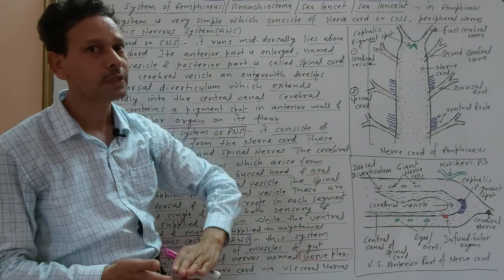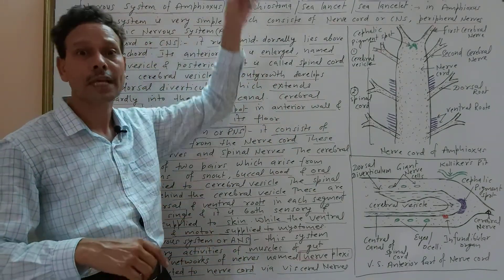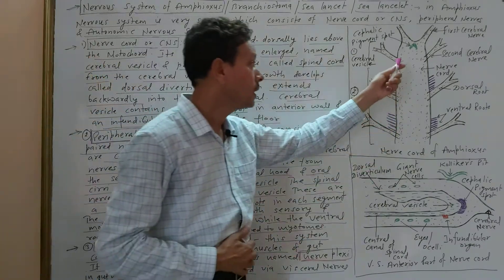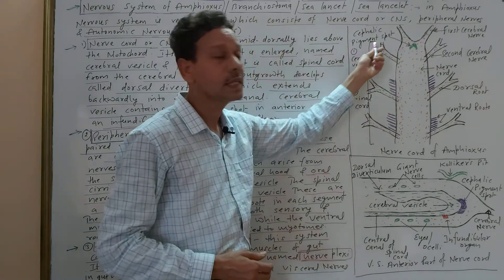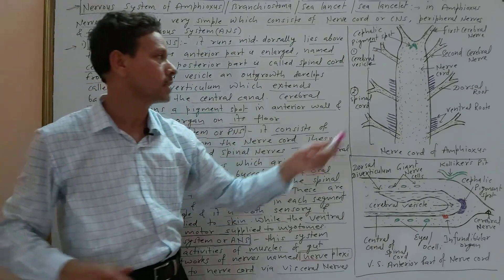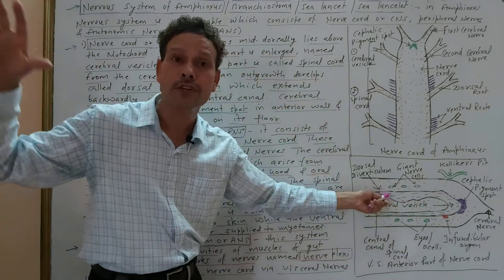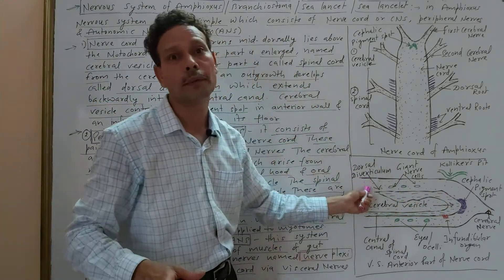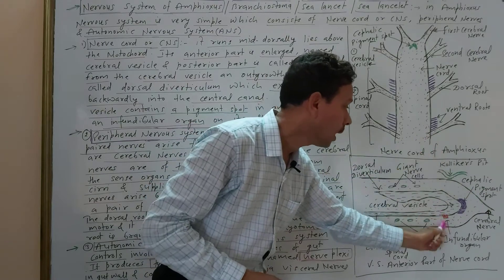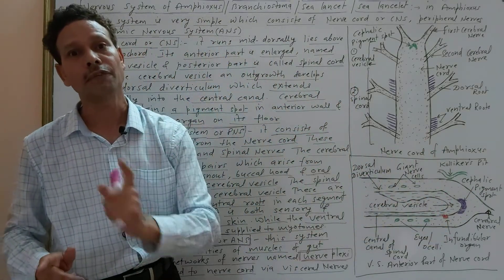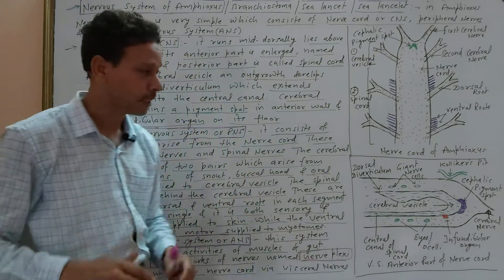To summarize the nervous system of Amphioxus: it is divided into three parts. First, the dorsal hollow nerve cord or central nervous system present in the center line of the body. This nerve cord has two parts: the anterior-most part is the cerebral vesicle, and the posterior elongated tubular structure is the spinal cord. From the cerebral vesicle there is a dorsal diverticulum projection, a cephalic pigment spot as sensory organ, an infundibular organ at the floor, and Kölliker's pit above.